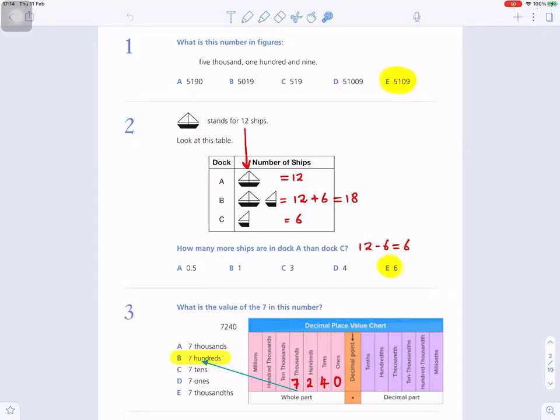A has got one of them, which is 12. B has got one of them and then a half. So it has 12, and half of 12 is 6, so it has 18. C has got half, which is 6.